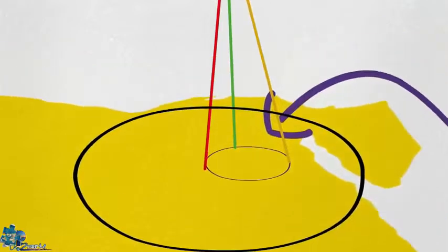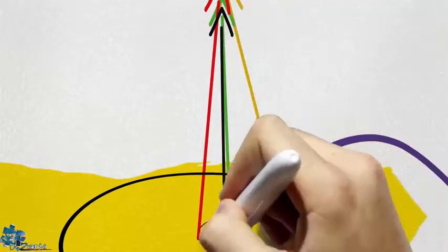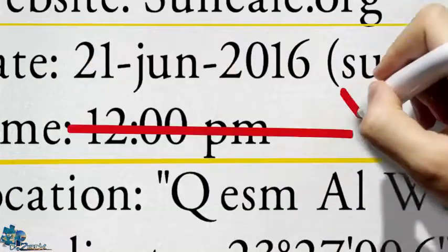And after we get the distance to the sun, we change the time from 12 p.m. to 1 p.m. and we do the same thing again.